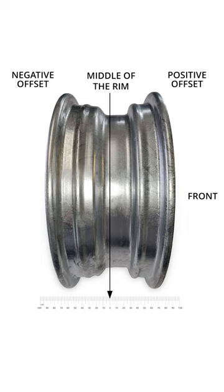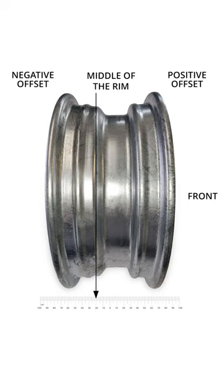A positive offset means the mounting surface is closer to the front or street facing side of the rim. A negative offset means the mounting surface is closer to the back or vehicle side of the rim. A zero offset means the mounting surface is in the centre of the wheel. The offset affects the clearance between the tyre and the suspension components.